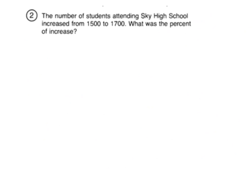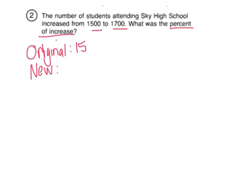I'm not as worried about the puzzle as I am that you're understanding how to do the percent change. Let's try the next one. This one says the number of students attending Sky High School increased from 1,500 to 1,700, and we're looking for the percent of increase. So the original amount and the new amount is what we're starting with.